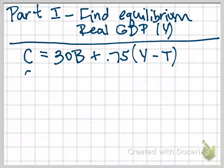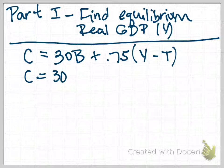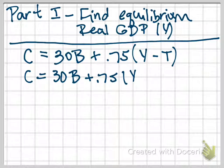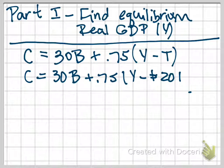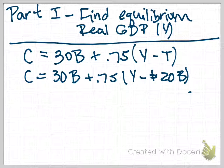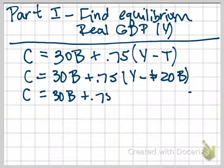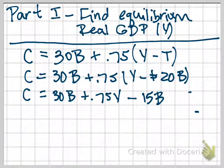Now I'm going to substitute in the value that I was given for net taxes. Y is our unknown; that's what we're going to be trying to solve for. But we were told that our net taxes were equal to $20 billion. I'm going to break this down and reduce it a little bit more, simplify it.